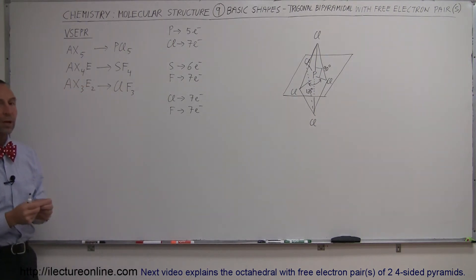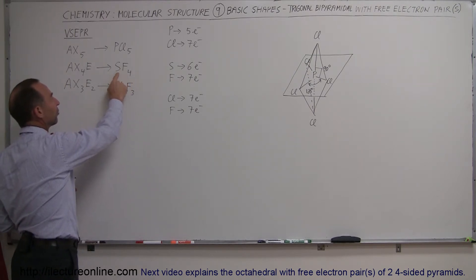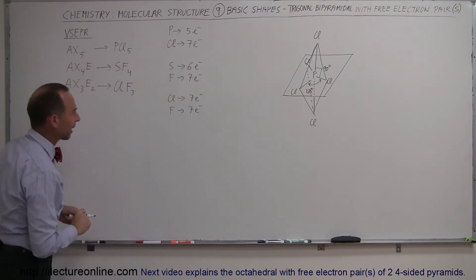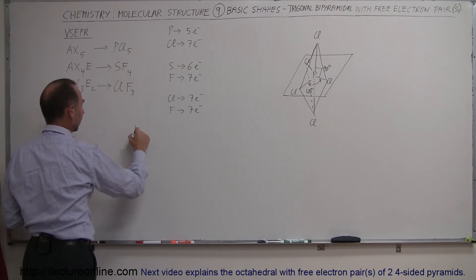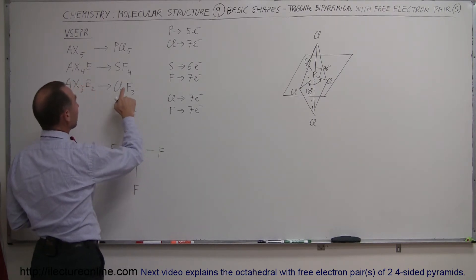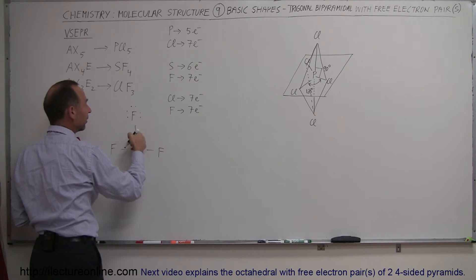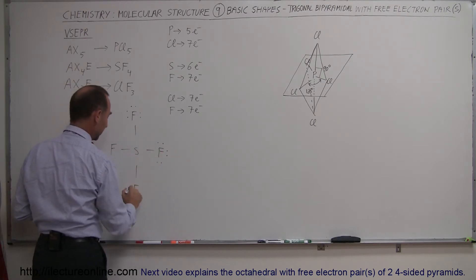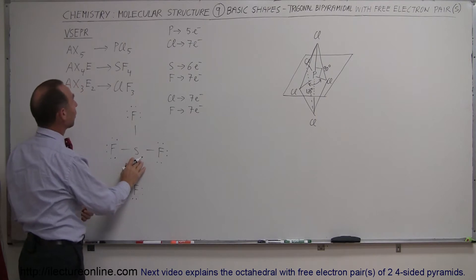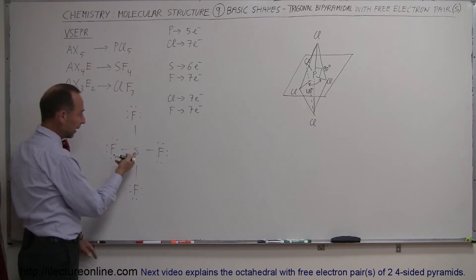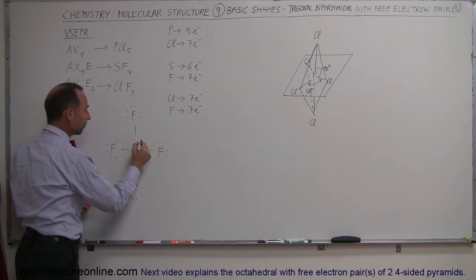What happens when one of those chlorines is replaced by a free electron pair? For example, with sulfur tetrafluoride — sulfur has initially six valence electrons. Drawing the Lewis structure: sulfur has six valence electrons bonded to four fluorines. Each fluorine has seven valence electrons, leaving six free electrons with one taken up in the bond. Sulfur started with six free electrons; four were taken up in the bonds, leaving two — one additional free electron pair.